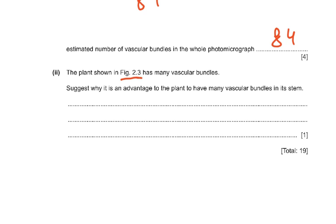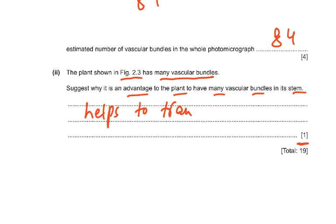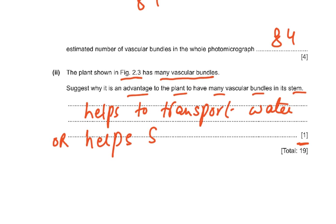The plant in figure 2.3 has many vascular bundles. Suggest why it is an advantage to the plant to have many vascular bundles in the stem — that's one mark. The advantage is it helps to transport water and assimilates: phloem transports assimilates (sucrose and amino acids) and xylem transports water and ions. Alternatively, you could say it helps to support the stem, because lignin inside the xylem provides structural support. Many vascular bundles means more xylem and phloem, more transport capacity, and more mechanical support.